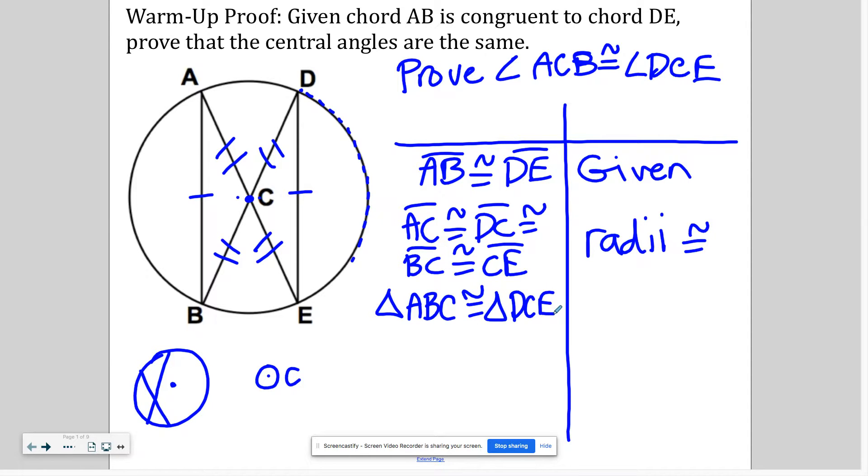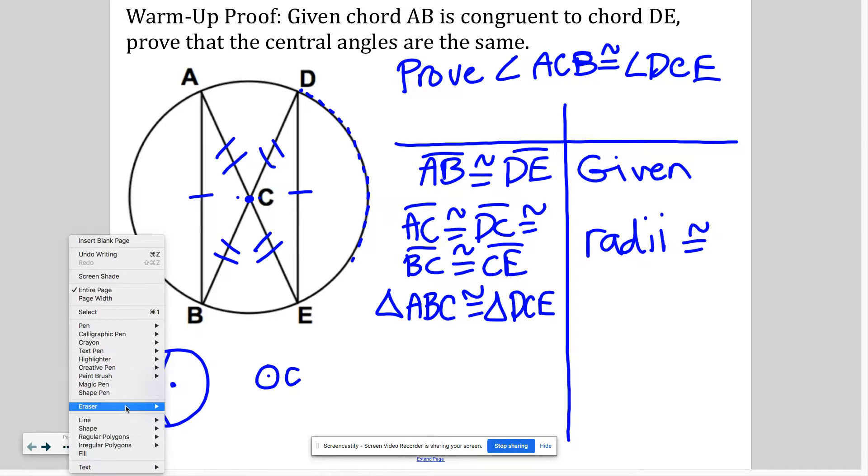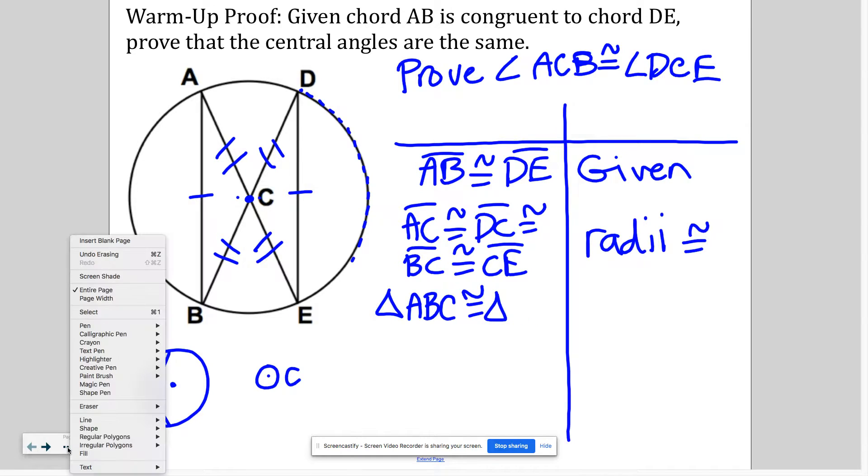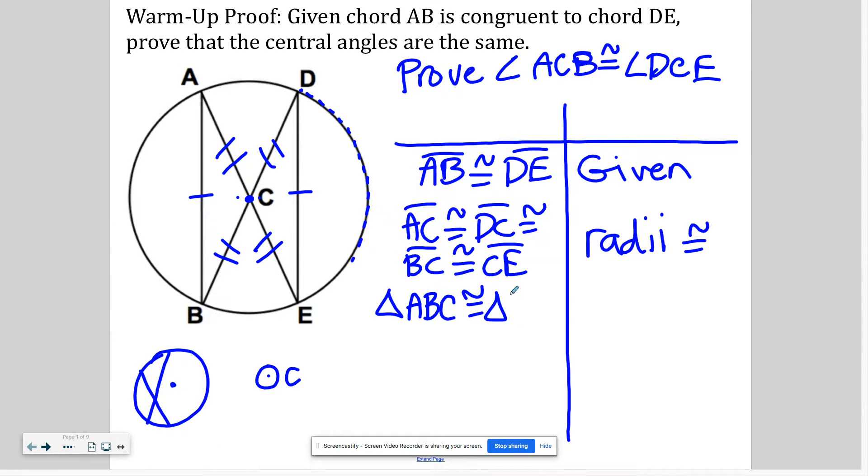Oops. I shouldn't have said, oops, that's not right. Let me, because of the way I wrote the first one, I have to match them up properly, don't I? So A I'll put with D, but B I'll match with E and then I'll put C with C. All right.